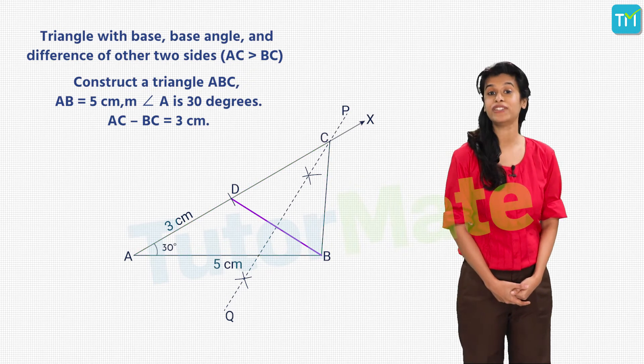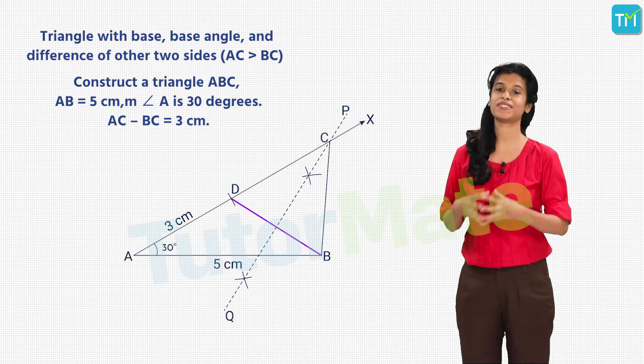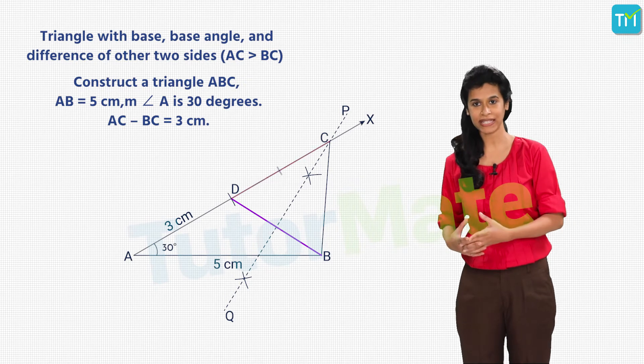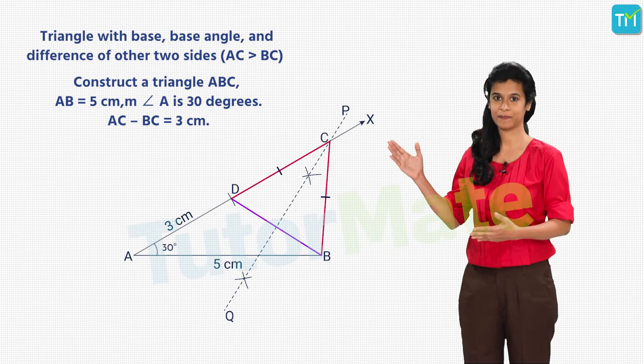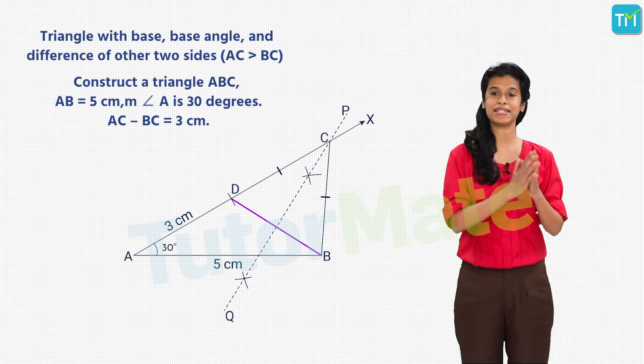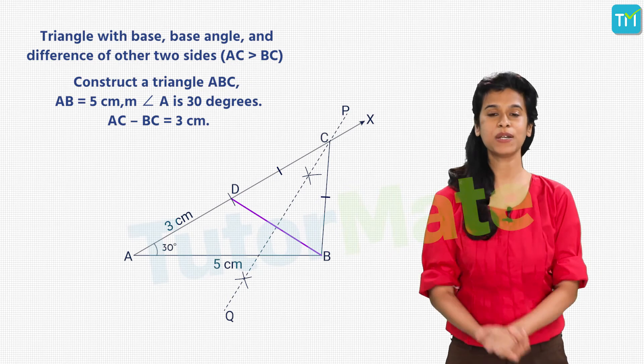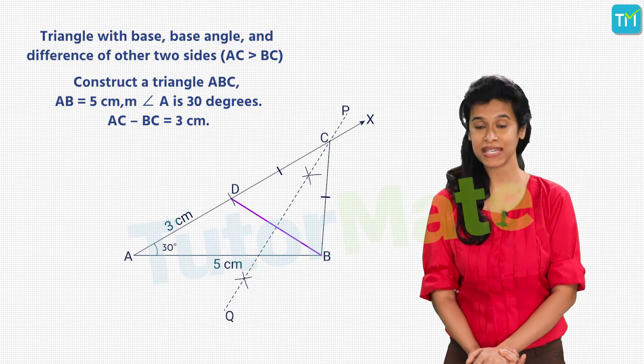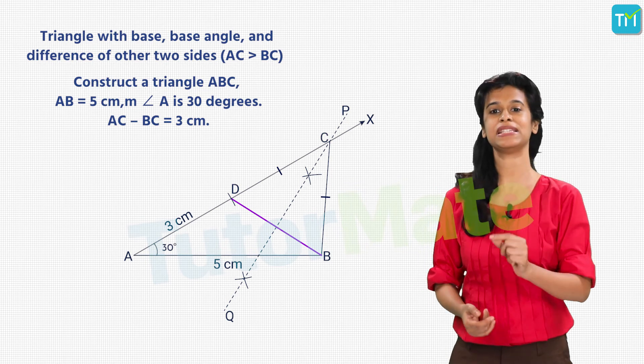How do we prove this? Since PQ is the perpendicular bisector of BD, hence CD is equal to BC. Now, AD is equal to AC minus CD. Hence, AD is equal to AC minus BC. AC minus BC is equal to 3 centimeters. Wasn't that cool?